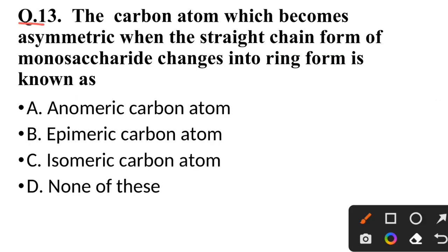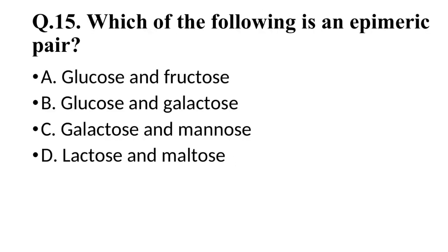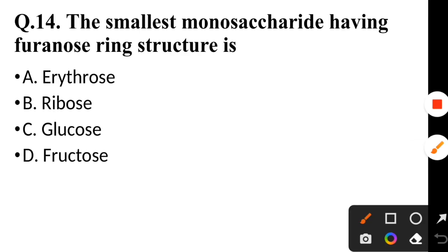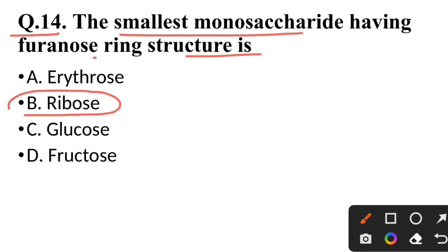Question 13: The carbon atom which becomes asymmetric when the straight-chain form of a monosaccharide changes into ring form is known as — correct answer is the anomeric carbon atom. Question 14: The smallest monosaccharide having a furanose ring structure is — correct answer is ribulose.